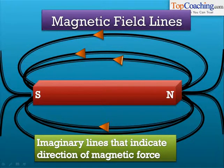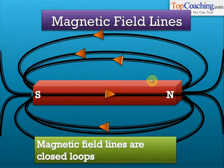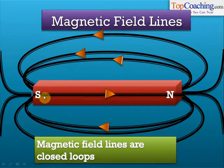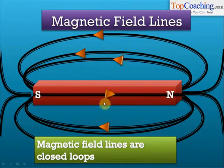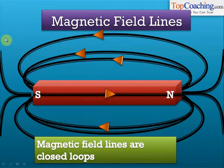Magnetic field lines are closed loops — they are always in loops. Take a look at this field line: it starts from the north pole, goes towards the south pole, and then inside the magnet it comes from the south pole back to the north pole. The direction of magnetic field lines inside the magnet is from south to north, which is opposite to the direction outside the magnet. The field lines at the edges appear to be open loops, but they are also closed loops — just very large ones that don't fit on the screen.